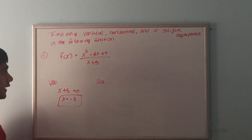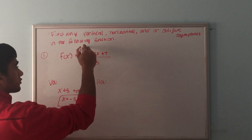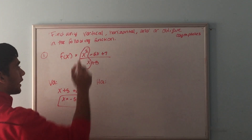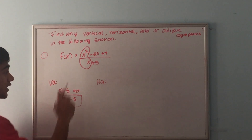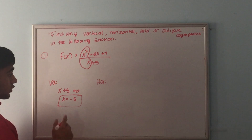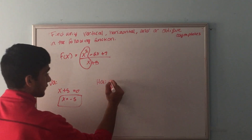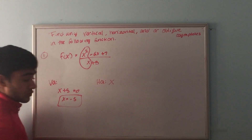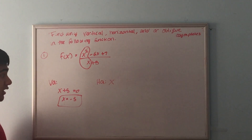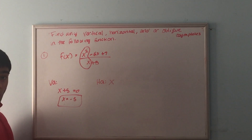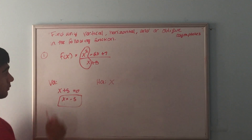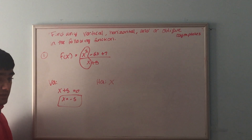Now for the horizontal asymptote — notice that the highest power in the numerator is greater than the highest power in the denominator, so there is no horizontal asymptote. A horizontal asymptote only occurs if the powers are equal, or if the power in the denominator is higher than in the numerator, in which case the horizontal asymptote would be y = 0.